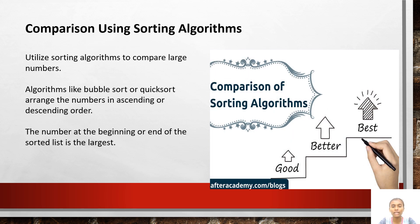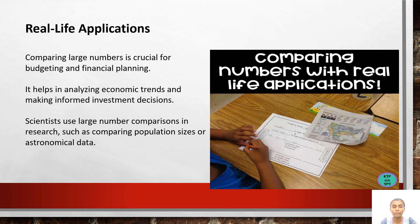Comparison using sorting algorithms: utilize sorting algorithms to compare large numbers. Algorithms like bubble sort or quick sort arrange the numbers in ascending or descending order. The number at the beginning or end of the sorted list is the greatest or largest. Real life applications: comparing large numbers is crucial for budgeting and financial planning. It helps in analyzing economic trends and making informed investment decisions. Scientists use large number comparison in research such as comparing population sizes or astronomical data.